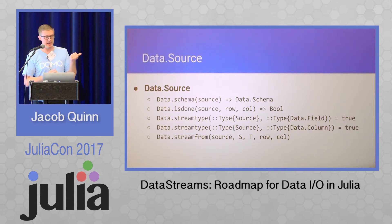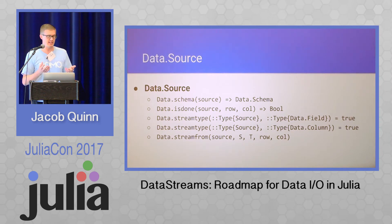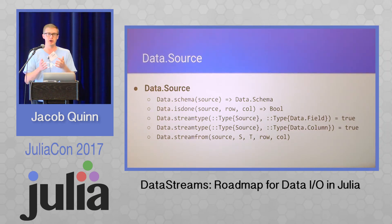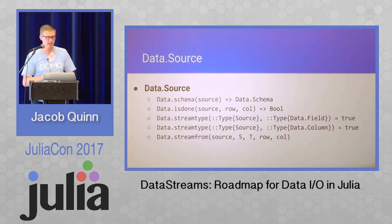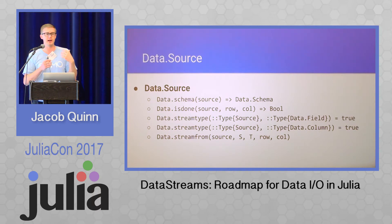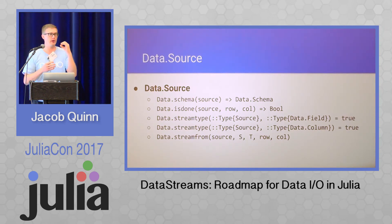That's important in the streaming process because syncs need to be able to prepare, allocate, and do other things in terms of preparing to receive data of a certain format. The next one is data_is_done — a source needs to be able to say when it's done streaming, given a row and a column. Sometimes that's not necessary, like for a file just reading to the end. But for other data sources, like a data frame, it needs to know what row and column we're on. And then the next two are not both required — this is a matter of signaling what kind of streaming your data source supports: can you stream a single row at a time, or multiple rows all at the same time?